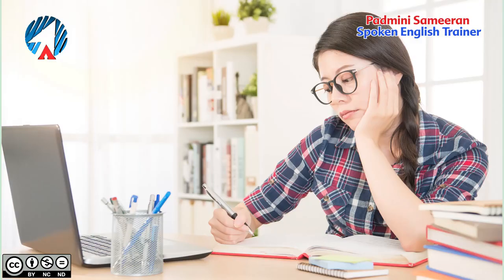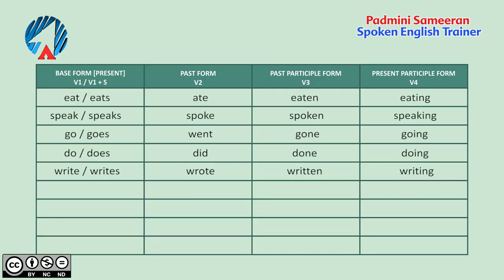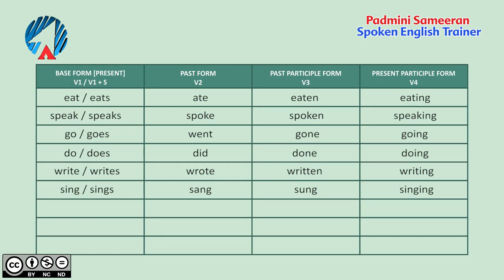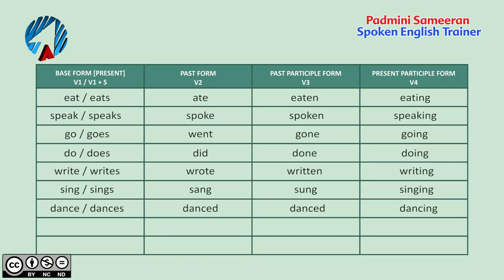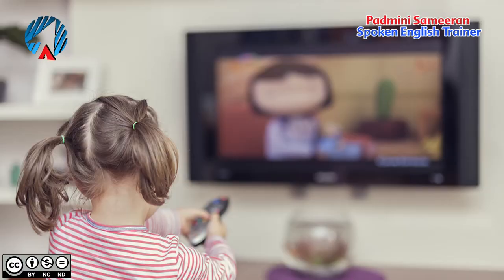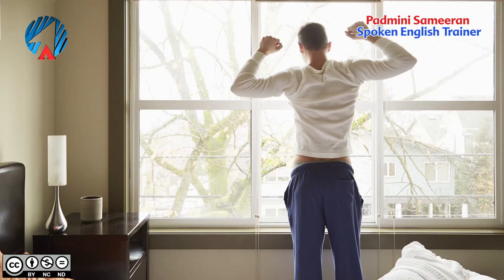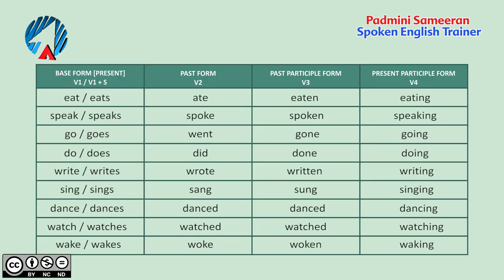The next verb is 'write' — write, writes, wrote, written, writing. Then 'sing' — sing, sings, sang, sung, singing. Then 'dance' — dance, dances, danced, danced, dancing. Then 'watch' — watch, watches, watched, watching. And then 'wake' — wake, wakes, woke, woken, waking. 'Wake' means to get up from bed. So these are examples of how the four forms are formed.